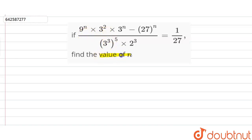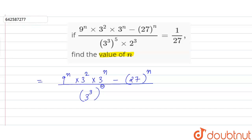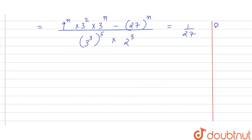We have been given an expression and we have to find the value of n. The expression given to us is: 9 raised to power n, into 3 raised to power 2, into 3 raised to power n, minus 27 raised to power n — all over 3 raised to power 3 whole power 5, into 2 raised to power 3 — is equal to 1 by 27.